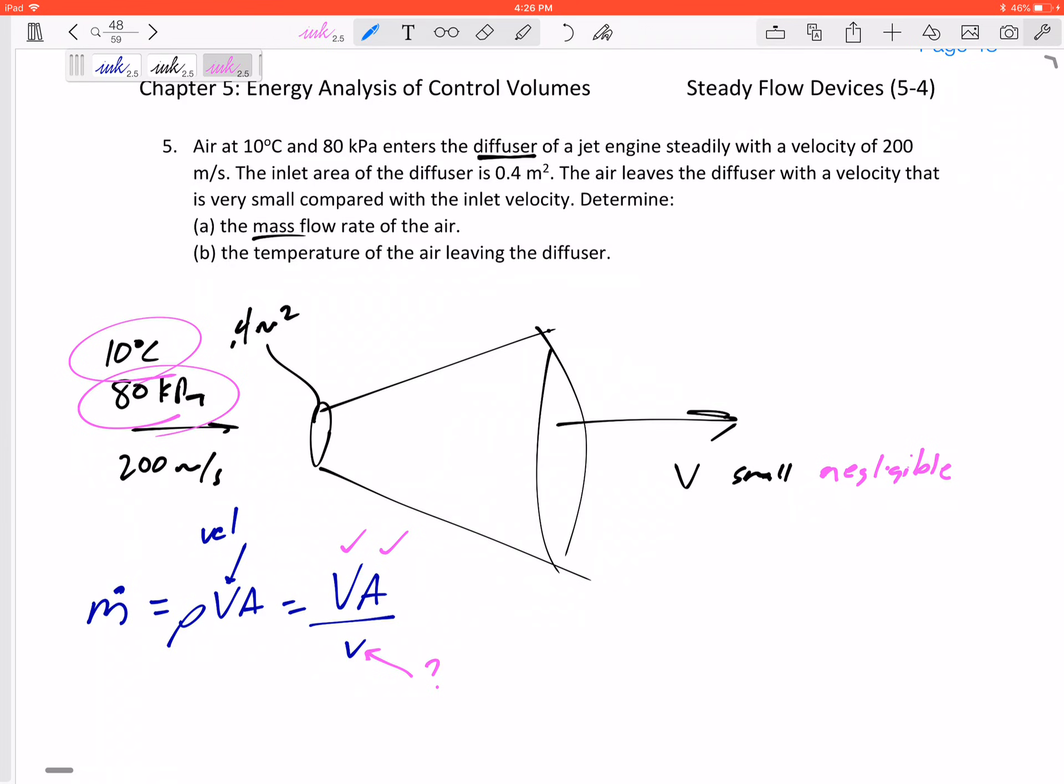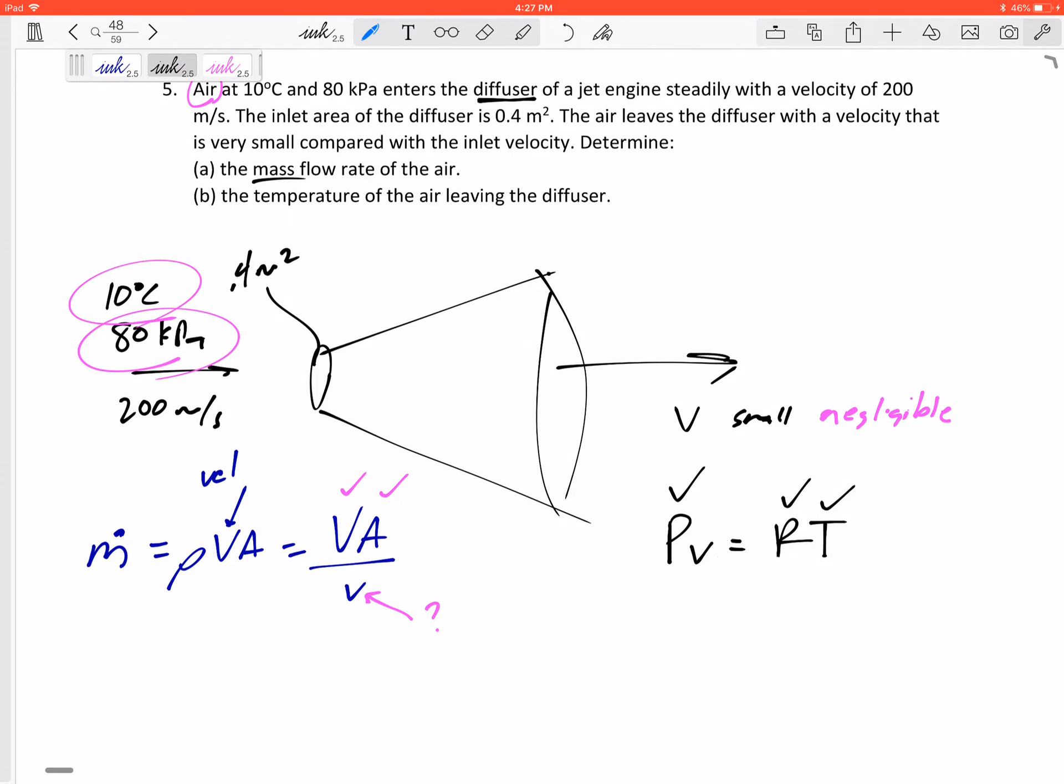My first instinct was we can get specific volume from the property tables in the back of the book. But this is air, and if we look at the air property tables, table A-17, it doesn't actually give us specific volume. A-17, 18, 19, 20 for all those ideal gases doesn't have it. But they are ideal gases. How about PV = RT?